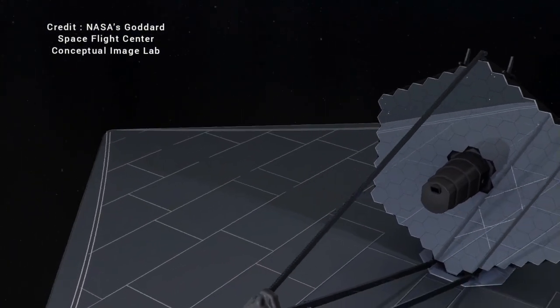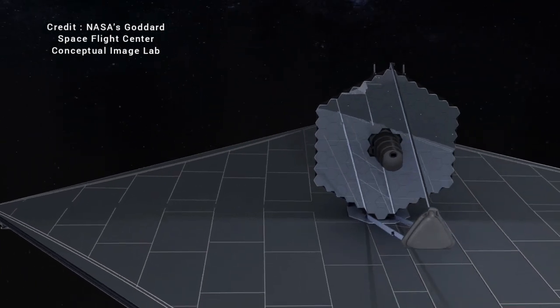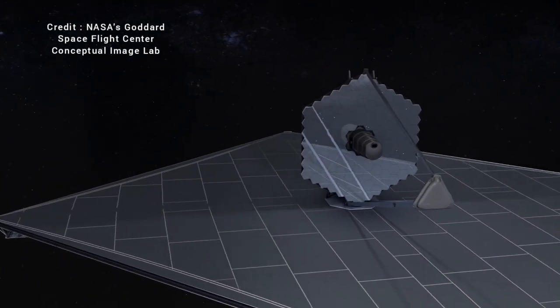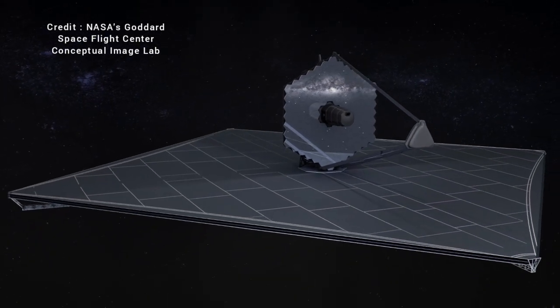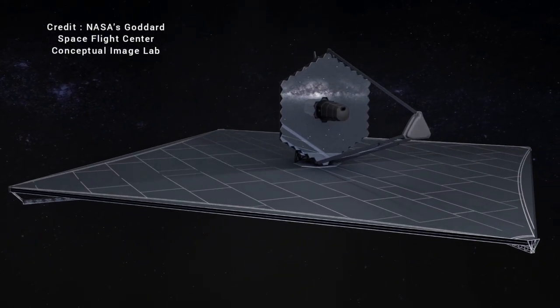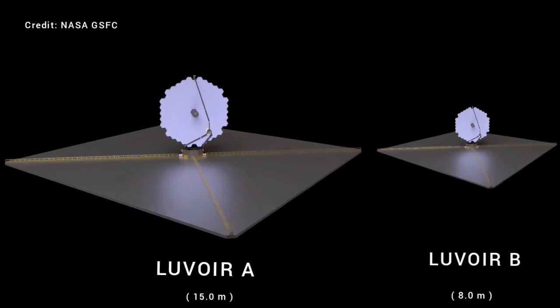LUVOIR's broad range of capabilities, including its wide UV-NIR wavelength range, will allow it to study yet to be discovered phenomena and answer yet to be dreamed of questions we do not yet know to ask. The LUVOIR study team is considering two architectures, one with a 15-meter mirror architecture A and another with an 8-meter mirror architecture B. Architecture A is designed for launch on NASA's Space Launch System SLS, while architecture B is being designed to launch on a heavy lift vehicle.